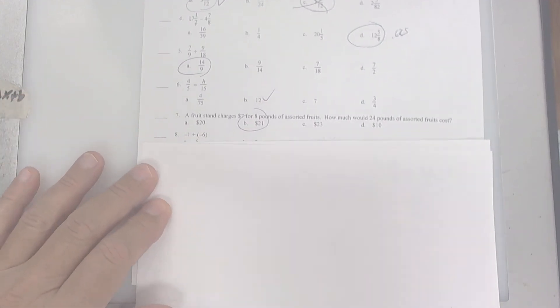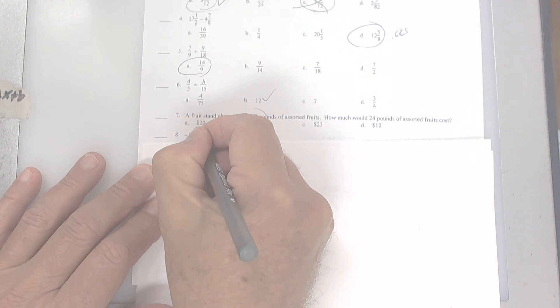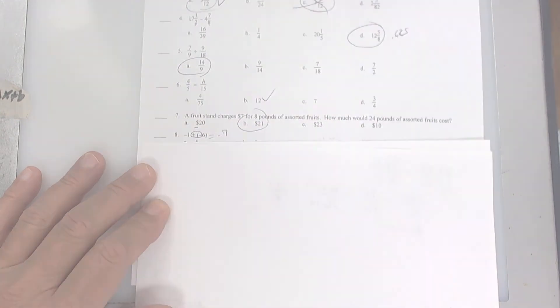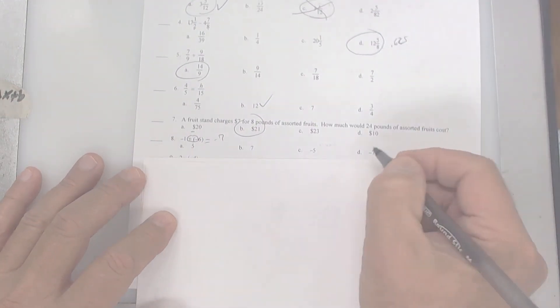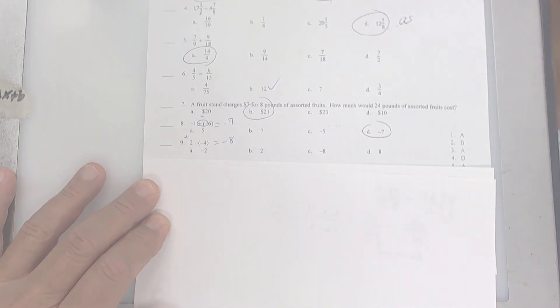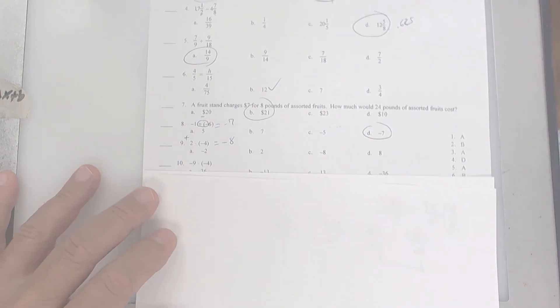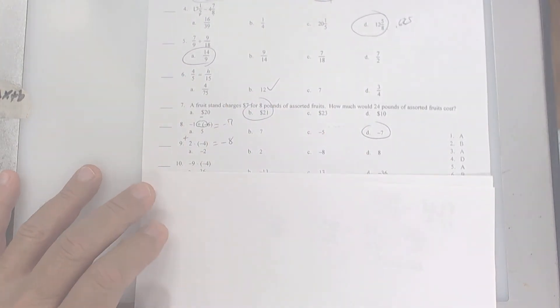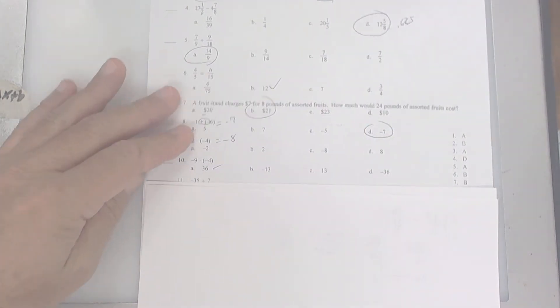On this next one right here, you have a double sign here. So circle it. A positive times a negative is a negative. So a negative 1 and a negative 6 is a negative 7. And that should be your answer there, which is right here. This one right here, you're multiplying. A positive times a negative is a negative. And 2 times 4 is 8. So you're looking for a negative 8, which is right here. This one right here becomes a positive, double negative. Two negatives makes a positive. So I guess that's 36. So I'd go with that one.